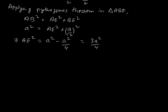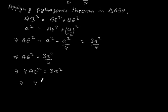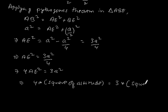This implies 4AE square is equal to 3a square, which implies 4 into square of altitude is equal to 3 into square of one side, hence proved.